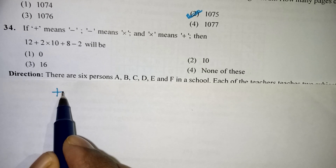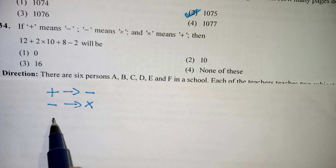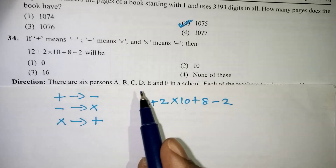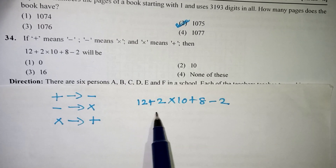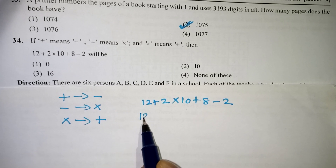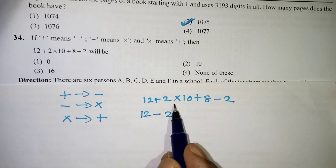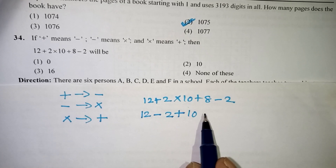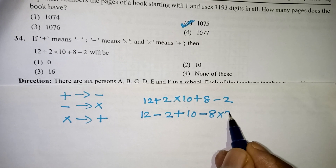Next question: Plus means minus. Minus means multiplication. Multiplication means addition. We apply the substituted symbols to the given expression. After substitution: plus becomes minus, minus becomes multiplication.